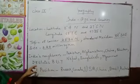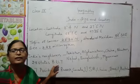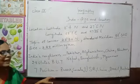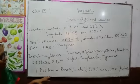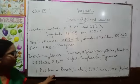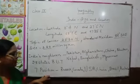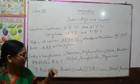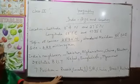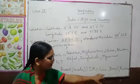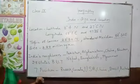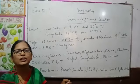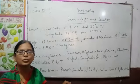Now we have 28 states and 8 union territories with capitals. India is at 7th position in the world by area — we are talking about Russia, USA, China, Brazil, Australia, and India. Talking about population, our country is in second place.